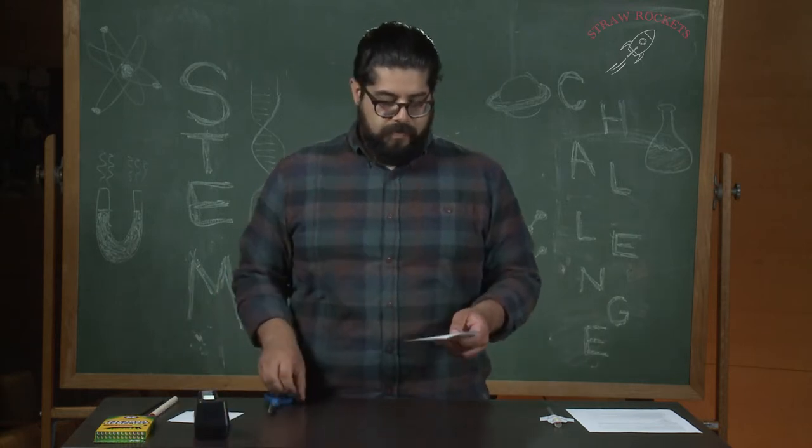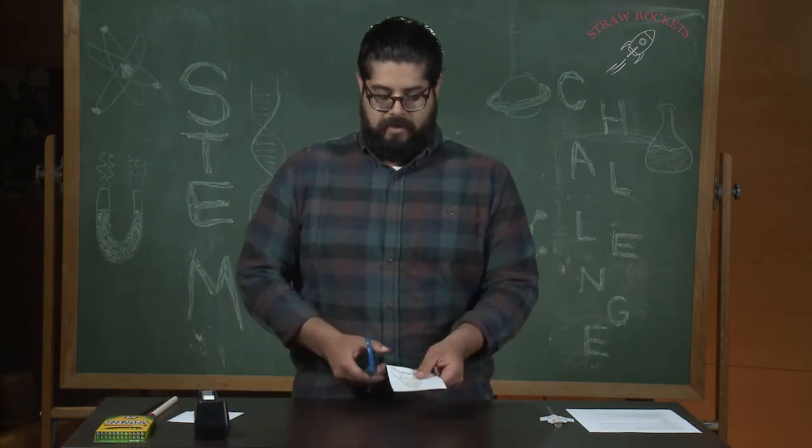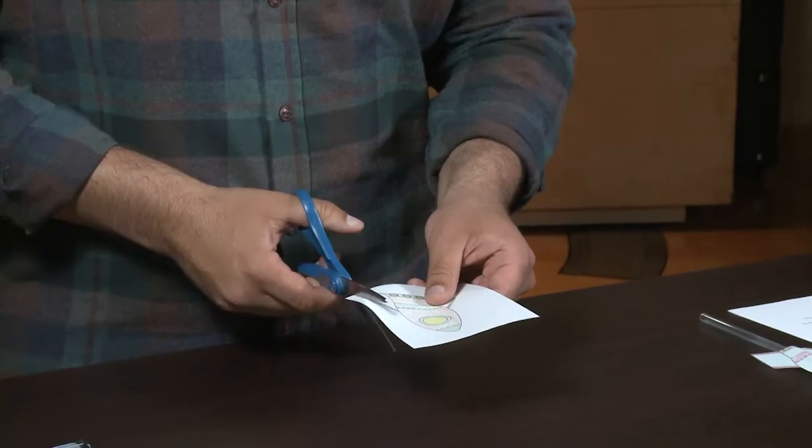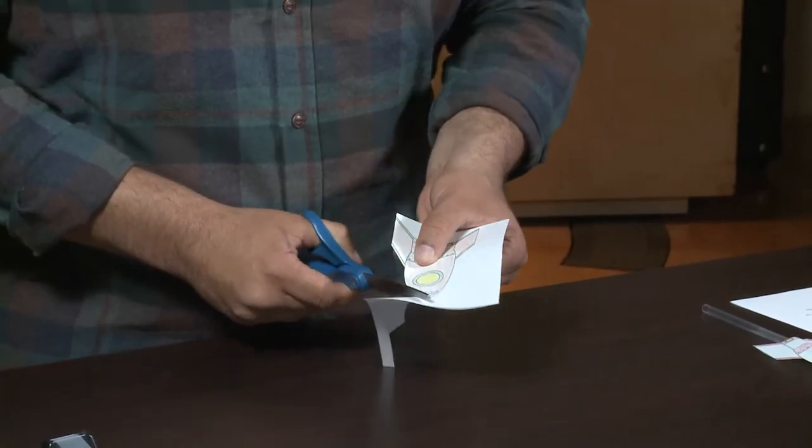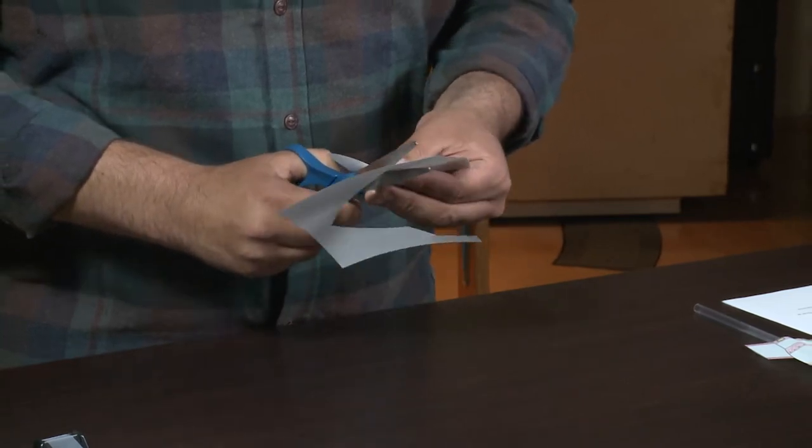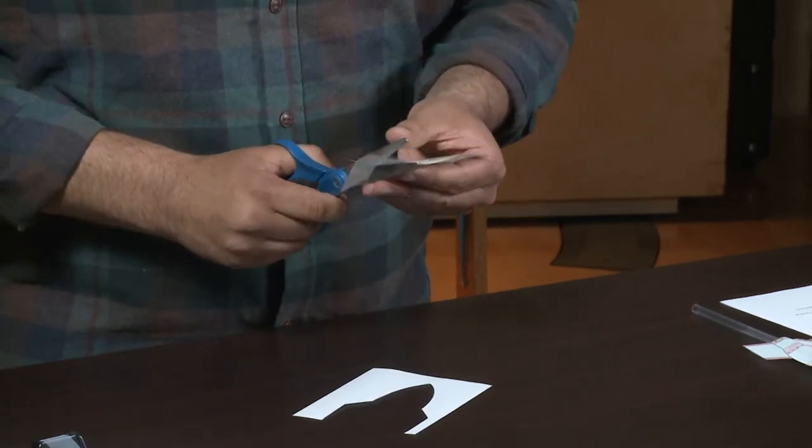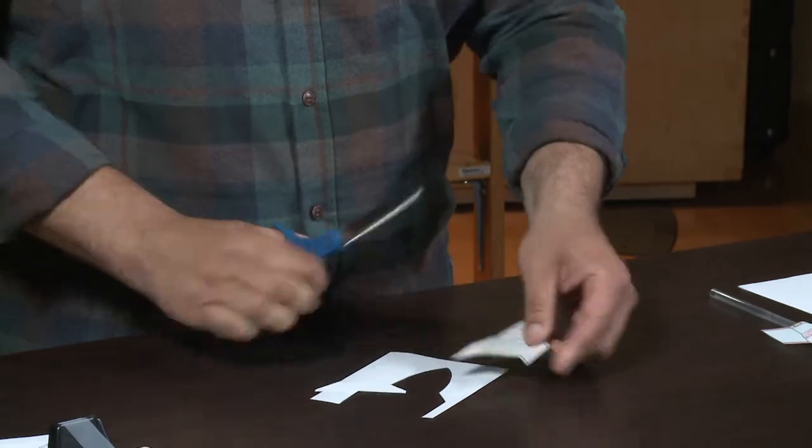First thing I'm going to do is cut out the rocket ship from the piece of paper. Okay, there we go.